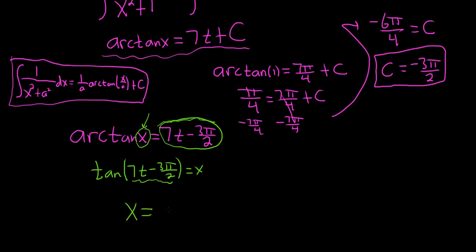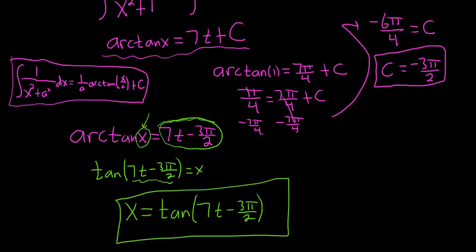Let me write it this way so it looks a little bit better. So this would be x equals tangent of 7 t minus 3 pi over 2. And that would be an explicit solution to the differential equation.